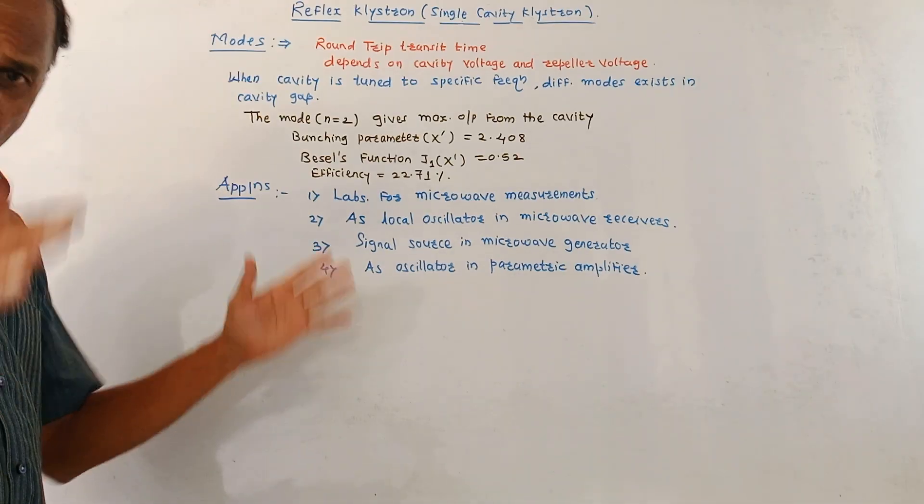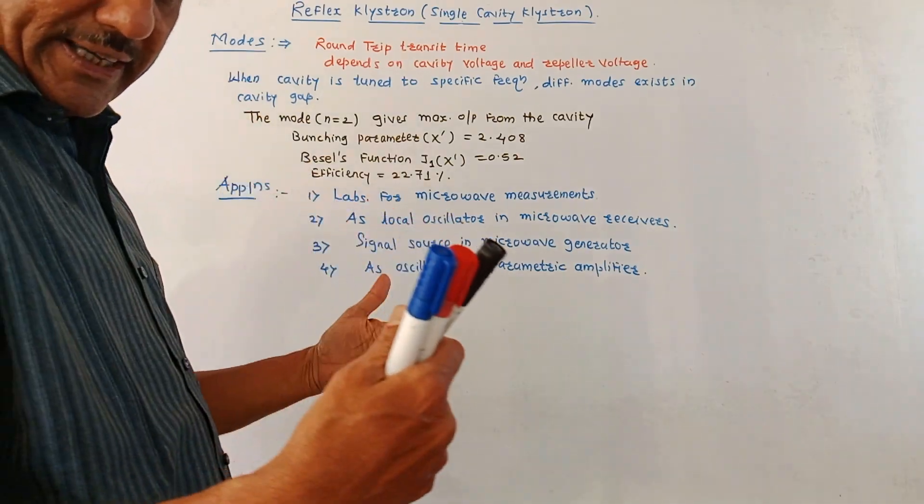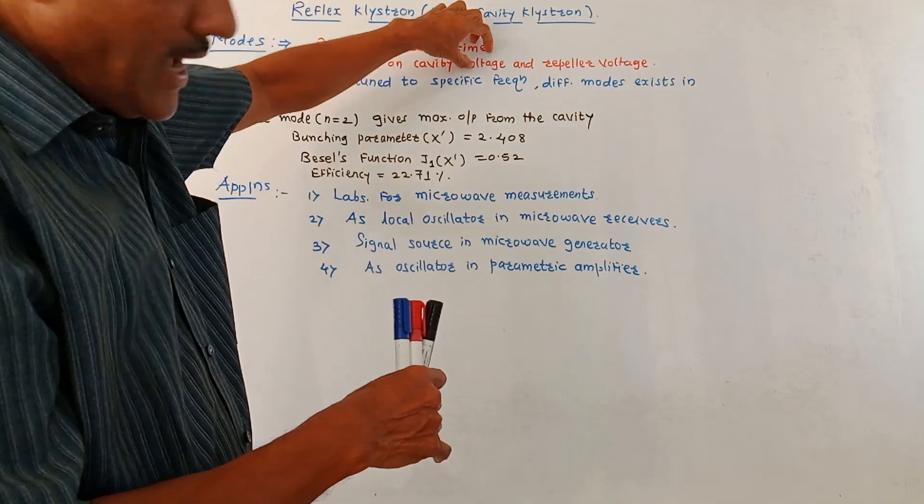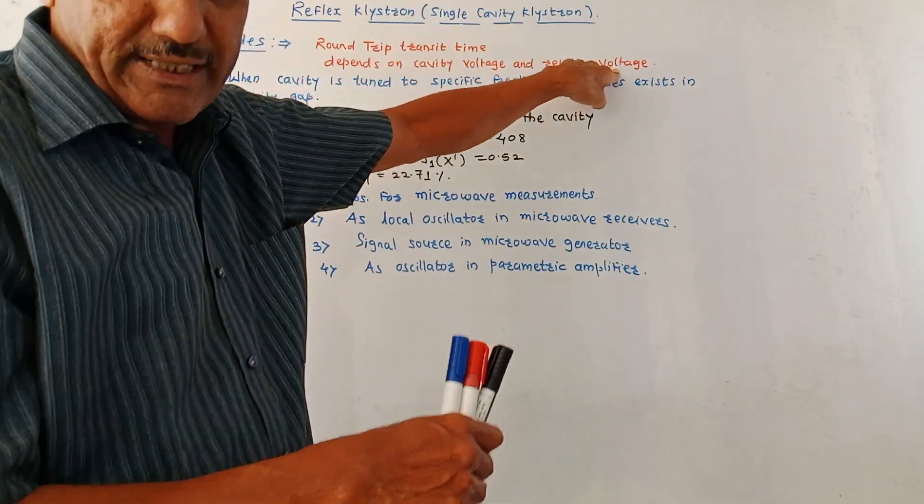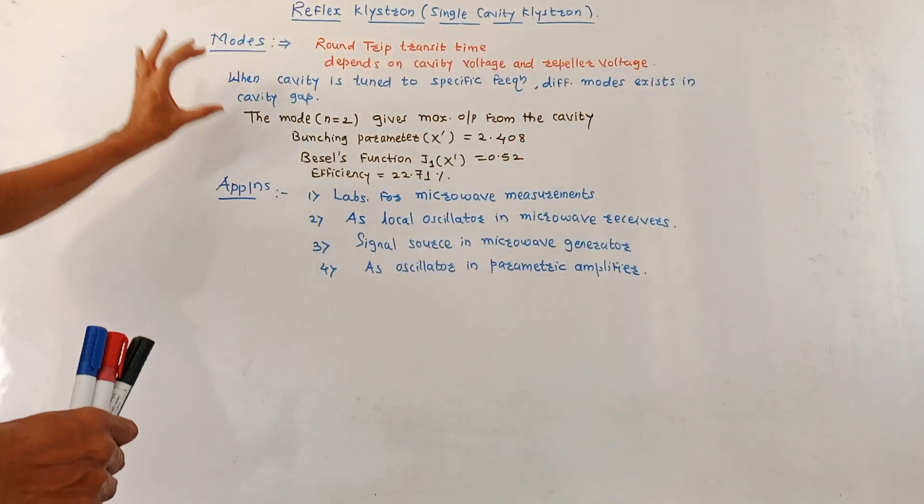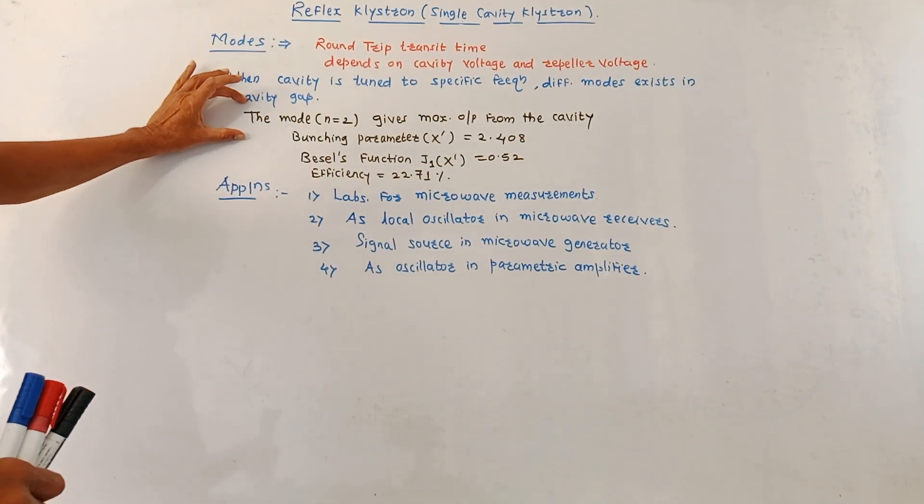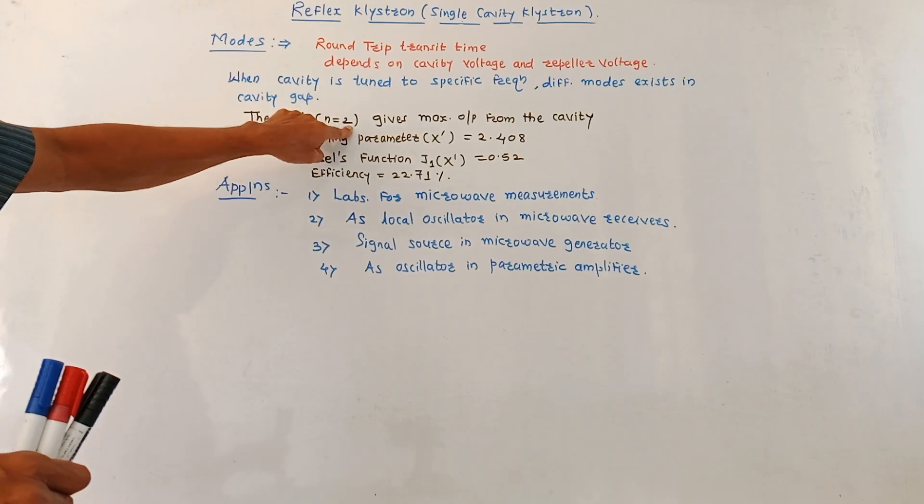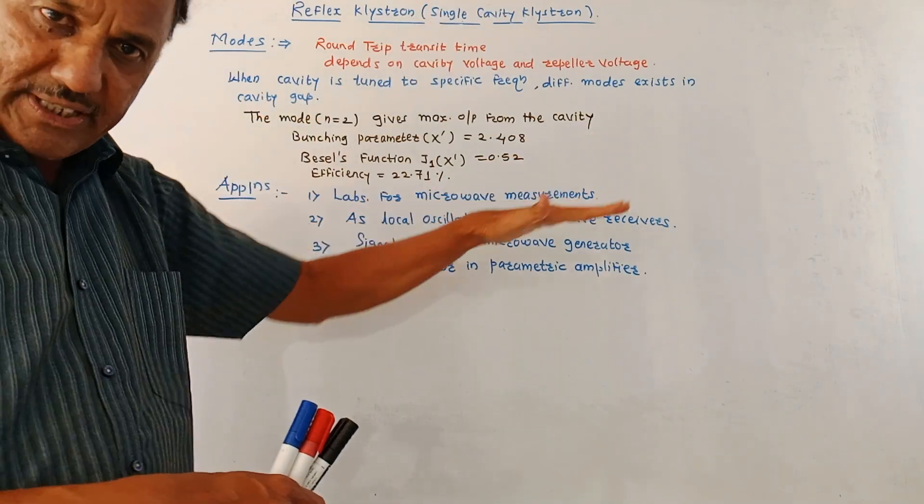Out of all these modes, the mode with n equals to 2 gives the maximum output from the cavity. The parameters related to this mode are there is one term called bunching parameter.